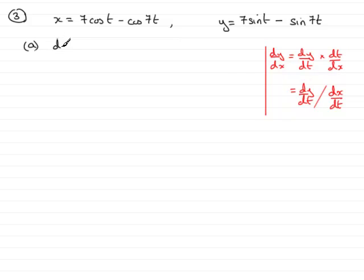So dy/dt will equal, and if we differentiate this with respect to t, differential of 7 sin t becomes 7 cos t. And the differential of minus sin 7t is going to be minus 7 cos 7t.